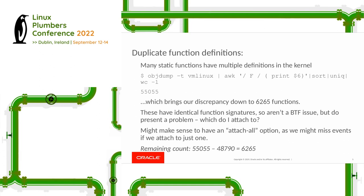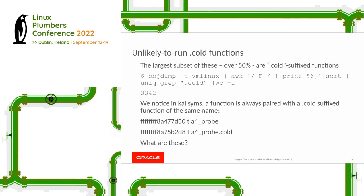In a case like this where it's the same function, you might want an 'attach all' option. I suspect what happens today is you probably get the first function in kallsyms that you come across with that name. From a tracing perspective, we really want to see when things happen and not miss events — that might be one potential solution in this case.